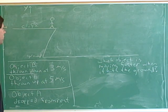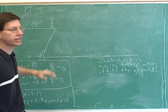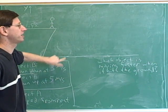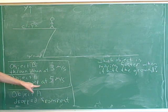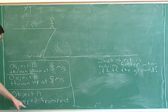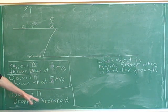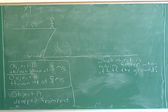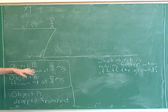All of the objects are starting at the height of the cliff and then eventually hitting the ground. Object B is being thrown down at 3 meters per second. Object E is being thrown up at 5 meters per second from the cliff, and object A is being dropped from rest from the cliff.